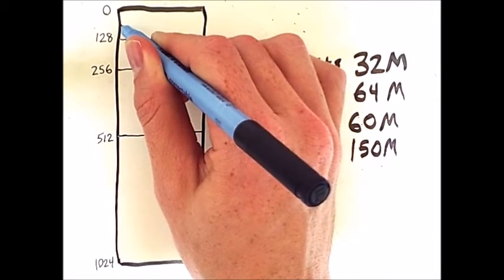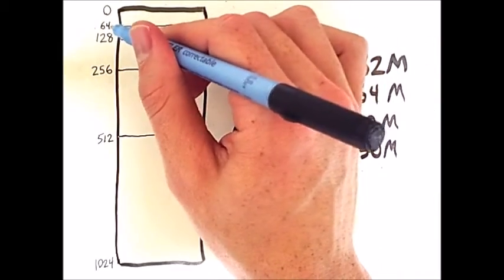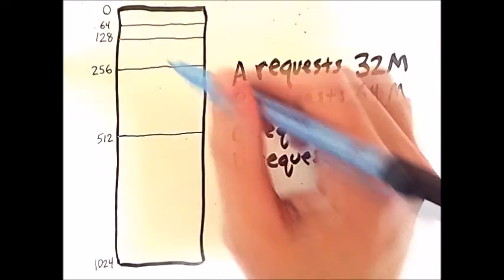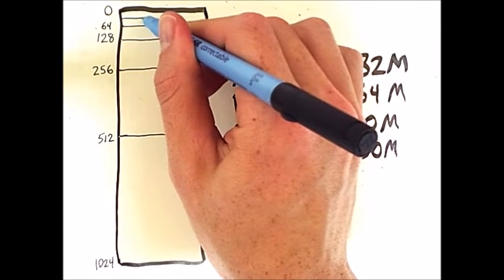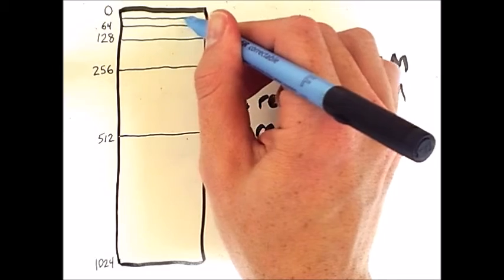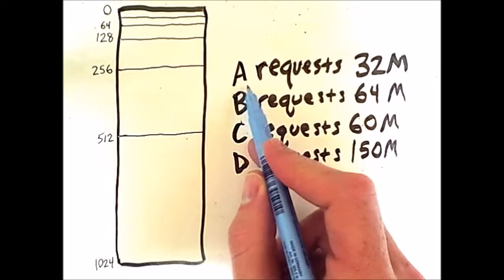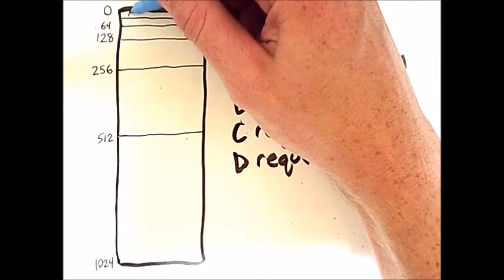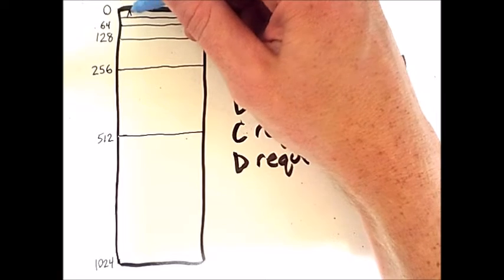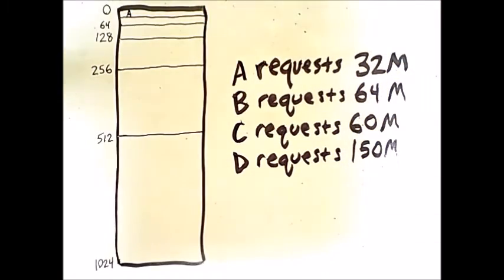Then 64. And then finally, half of 64 is 32, so we will split this upper region in half and be able to assign process A to the first region in memory that has a partition size of 32 megabytes.